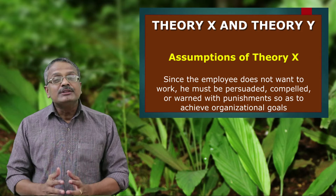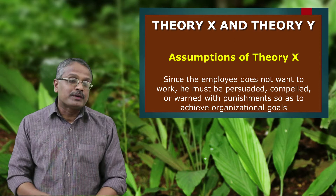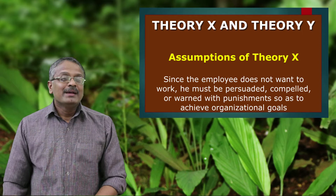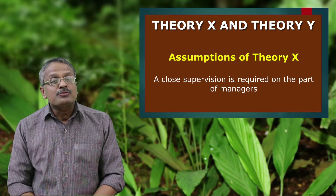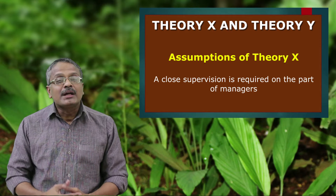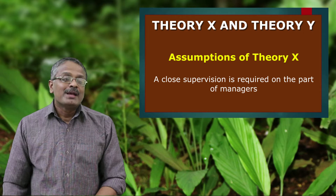Here the manager is of the opinion that employees are lazy and therefore he should persuade and compel them to do the work. The manager believes that if he does not compel them or warn them with punishments, they won't do the work. The third assumption: close supervision is required on the part of managers. The manager has some doubts on the sincerity of employees and believes that employees are lazy, and therefore strict supervision is required.